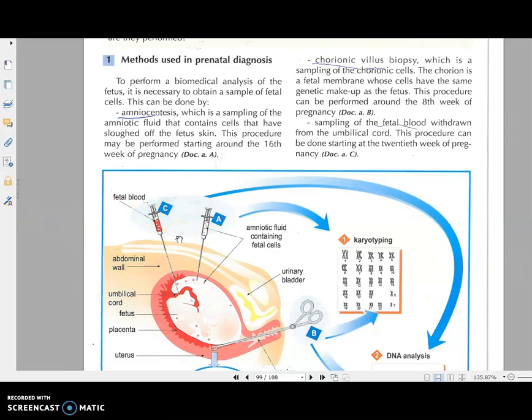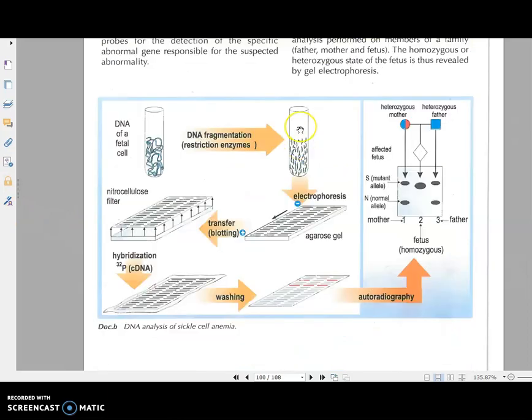Now you know karyotyping is easy. We take cells, we make culturing, and we extract the chromosomes and we make karyotyping. We can determine whether this child has trisomy 21, monosomy 21, etc. But if we want to make DNA fingerprinting, we take the DNA from the fetus, we add restriction enzymes to cut it, then we put gel electrophoresis. After gel electrophoresis, which we discussed in detail in chapter 3, we make transfer blotting by neutral cellulose filter paper and we add probe, radioactive probe P32 cDNA, then we obtain bands.